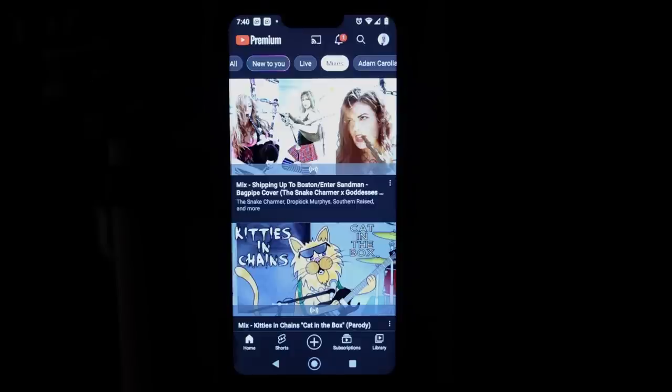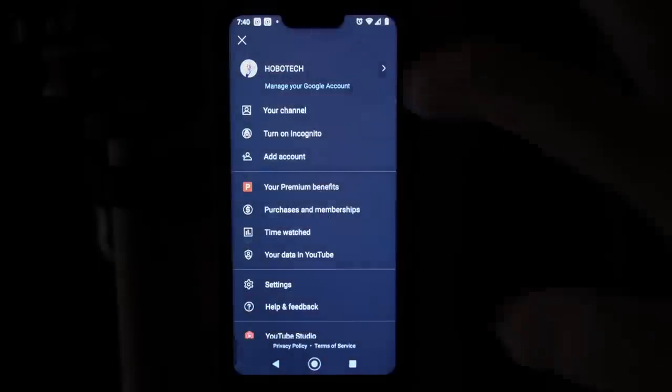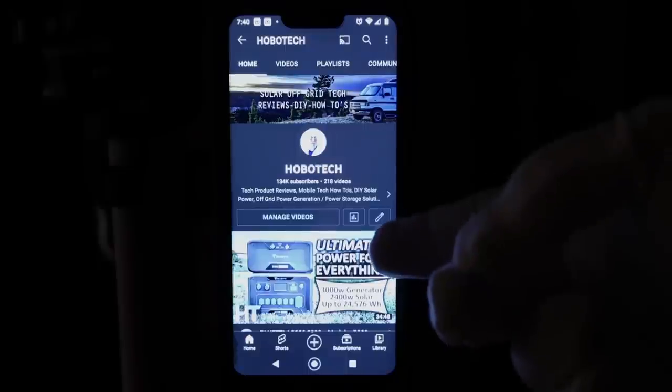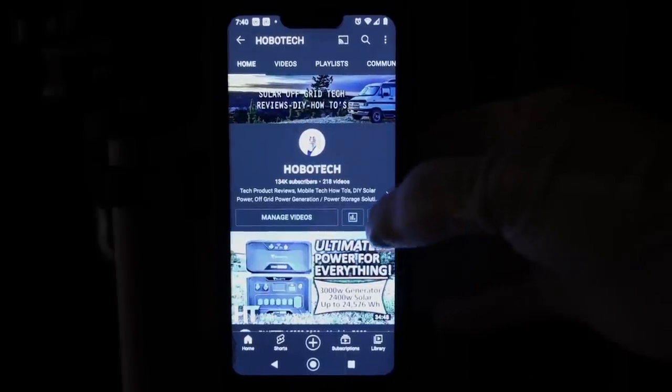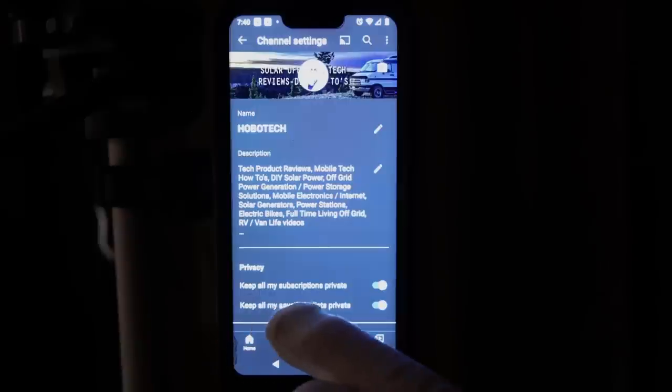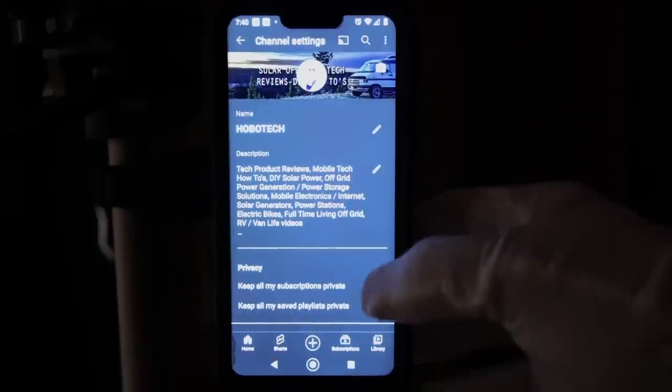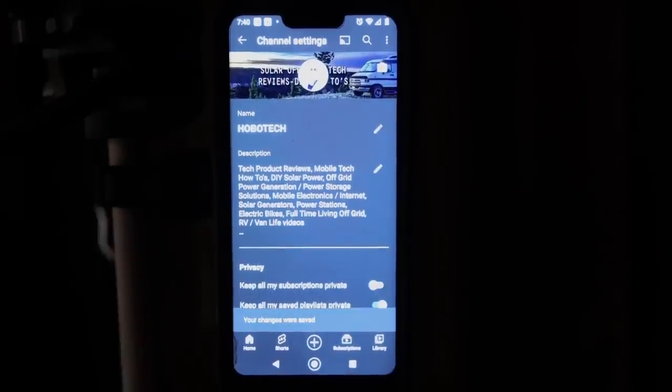Okay, to do this on your mobile app, just click your portrait in the upper right-hand corner. Go to your channel. Now, right above my finger is either going to be a pencil icon or a wrench, depending on your version. So go ahead and click on that. You'll see it says keep all my subscriptions private. You'll want to turn that off, and then you're ready to go.